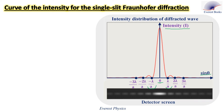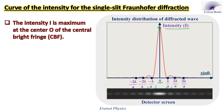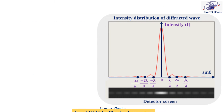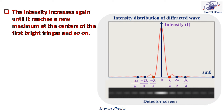At zero, or at the center of the central bright fringe, the intensity is maximum. Then this intensity decreases until it becomes zero at the first dark fringes on both sides of the central bright fringe. The intensity increases again until it reaches a new maximum at the centers of the first bright fringes, and so on.